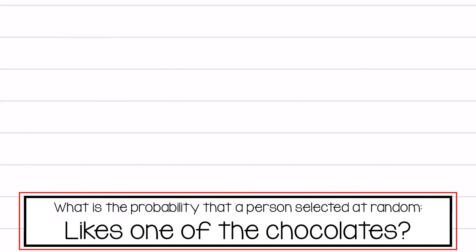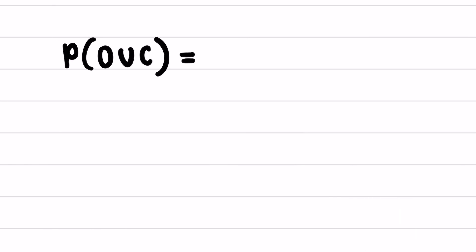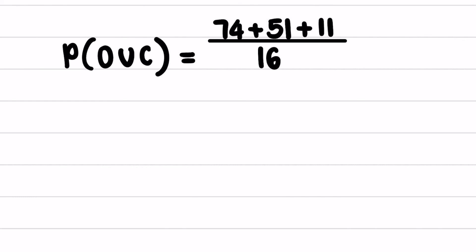The last question asks: what is the probability that a person selected at random likes one of the chocolates? That is the probability of orange or caramel, equal to 74 plus 51 plus 11 over 160, which gives 136 over 160, simplifying to 17 over 20.